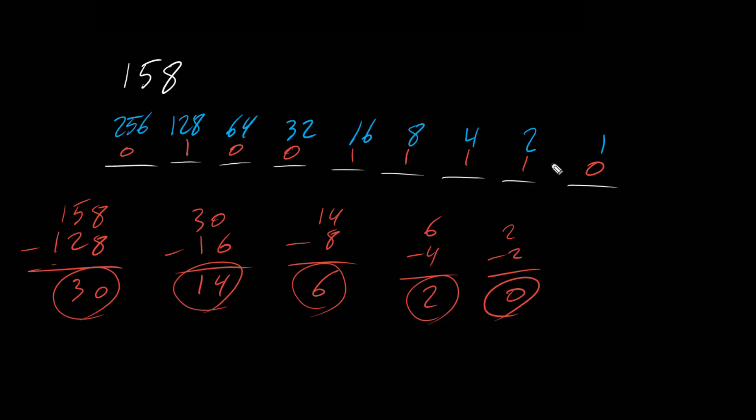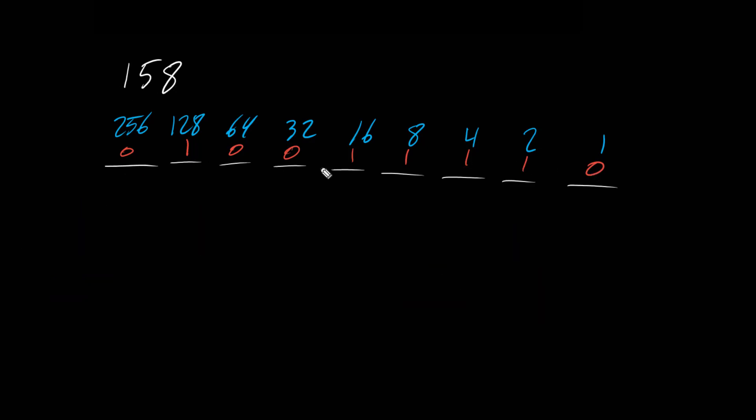So this is our binary number for 158 decimal number. Now we have our binary. Let's write down our binary here.